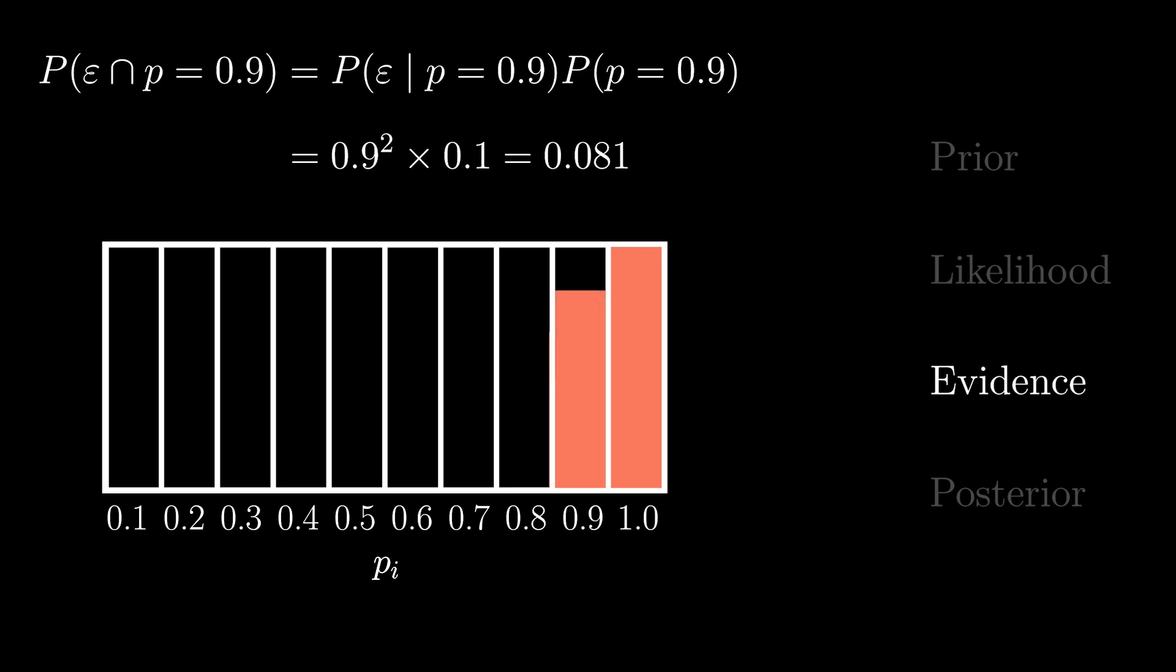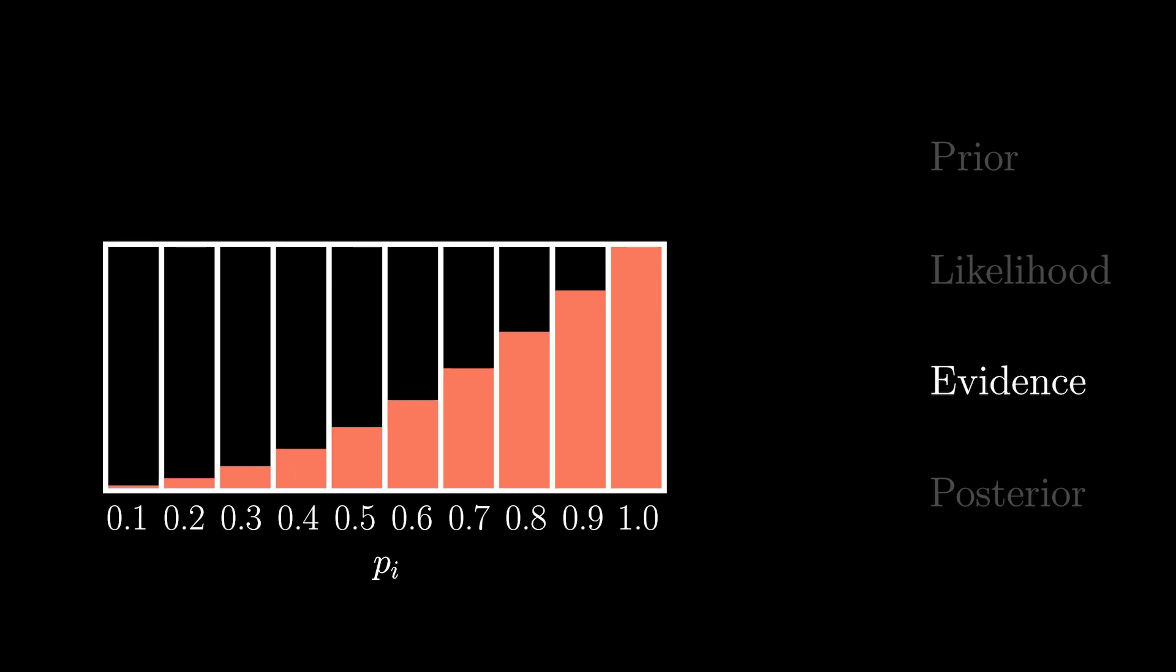We initially believe that there is a 10% chance that p should equal 0.9, and, if it is indeed the right value, the chance we would have observed two sunny days in a row would be 90% times 90%, or 81%. And we can now similarly do the same calculation for our other possible values for p.